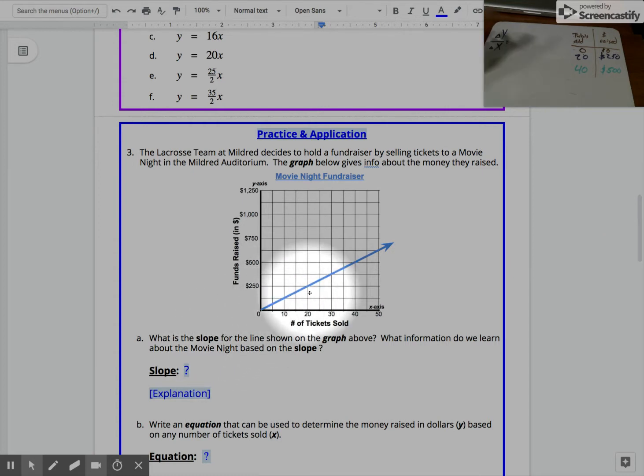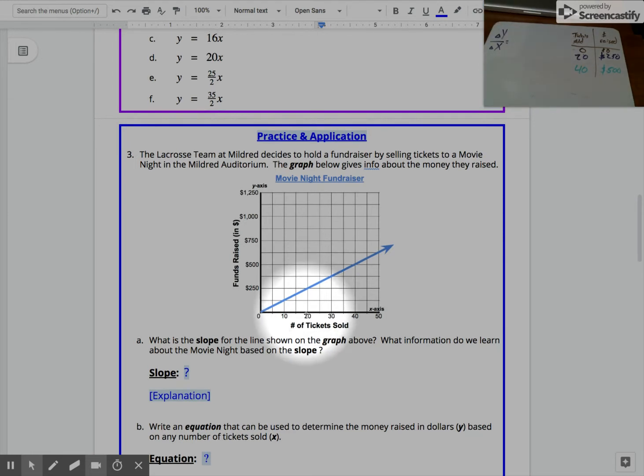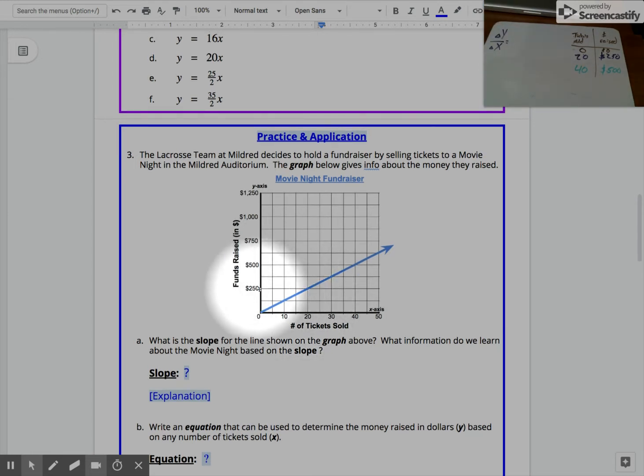To find slope, we're going to need to find points or data points on this line. As I look through here, you see on my whiteboard I've picked out a few. When x is at 20—20 tickets sold—we're at 250. That's that first data point you see in purple. When x is at 40, y is at 500. That's that second data point you see in green.